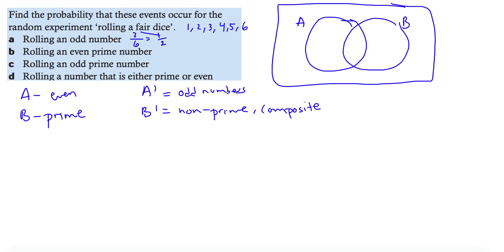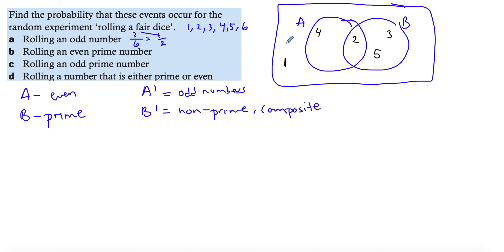Listing out all my numbers: one is not a prime and not an even number, so it stands outside. Two is the only even and prime number, so it goes inside the intersection. Three is a prime but not even. Four is even but not prime. Five is prime but not even, and six is even but not prime.